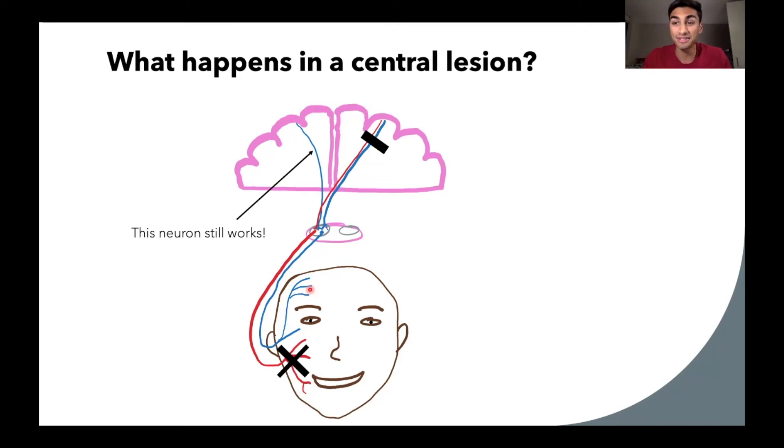So what does this look like in the patient? Well, like we said, the lower right side of the face is going to have paralysis. That's what we see here. But the forehead on the right side, because it still gets innervation from the ipsilateral side, is preserved. So we still have the raised eyebrows, and we still see the forehead wrinkling. So that's why the forehead is spared in a central lesion.